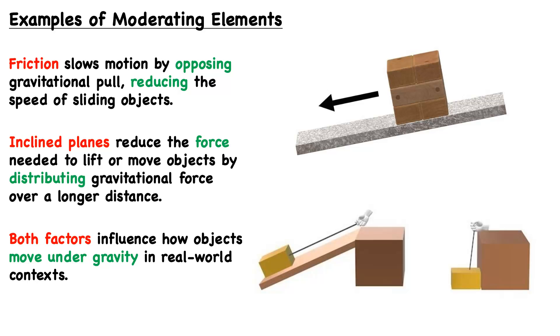We also talked about air resistance, and these are what we mean by moderating elements. We like to talk about and learn about gravity, ignoring these other factors. But in real-world scenarios, there are many factors and parameters that will influence how objects move under gravity.